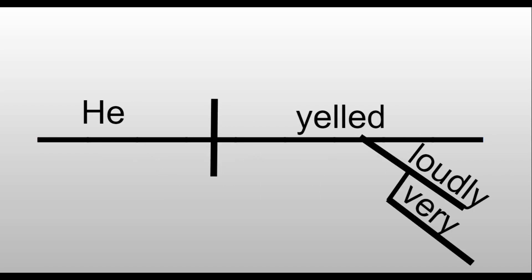He yelled very loudly. So when we diagram that, he yelled. Yelled is the action word. Loudly is how he yelled. Loudly is your adverb describing how he yelled. Very is your intensifier. It's intensifying how loudly he yelled.